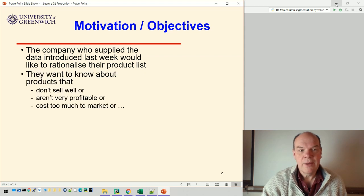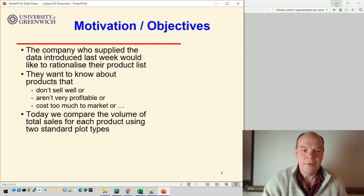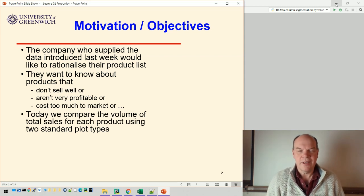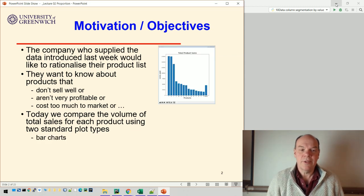Today we're just going to look at the proportion of each product - which is the highest selling product, which is the lowest selling product, and how we might split them up. We're going to use two standard plot types.